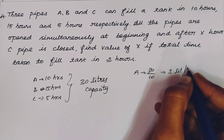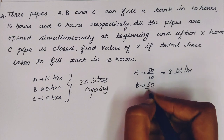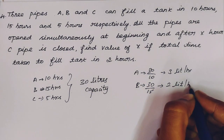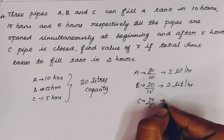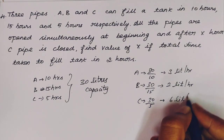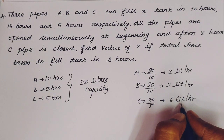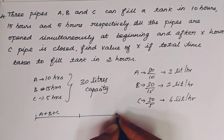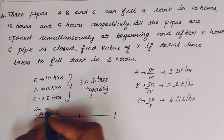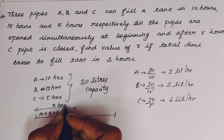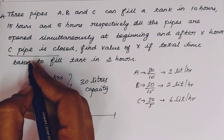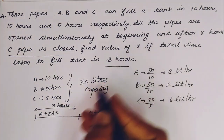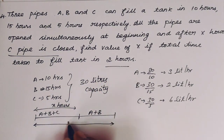Now for the 4th question, we have 3 pipes A, B and C again, with the same data. A fills 3 liters per hour, B fills 2 liters per hour, C fills 6 liters per hour. The difference here is that starting with 3 pipes open, after a certain time C pipe is closed and the remaining is filled by A and B. Total time is 2 hours.